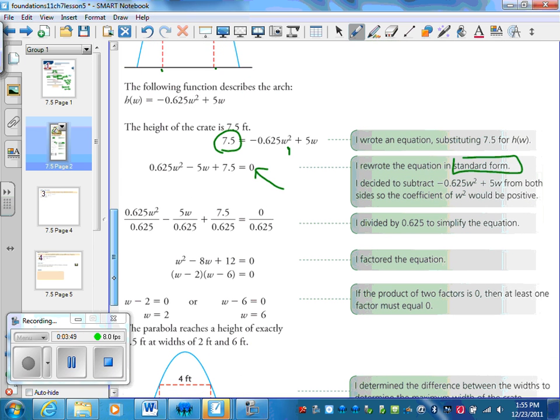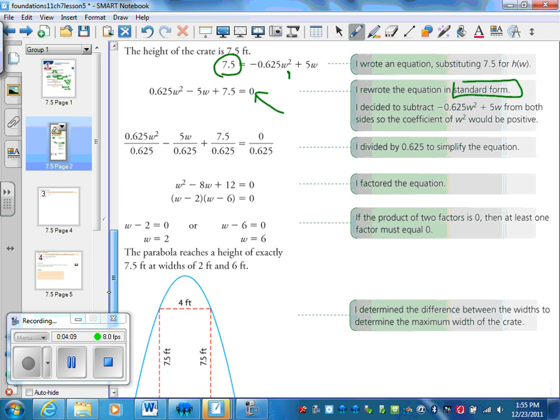Then she wrote it in standard form, and we should remember that the standard form means that we make one side equal zero. Now she said, you know, I don't like these decimals. I'm going to divide everything by 0.625 and see what happens. So we get w squared, 5 divided by 0.625 is 8, 7.5 divided by 0.625 is 12, and 0 divided by a number is 0.